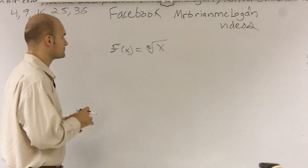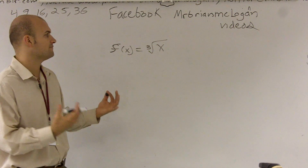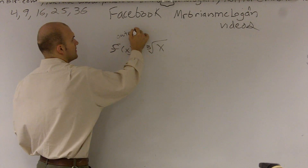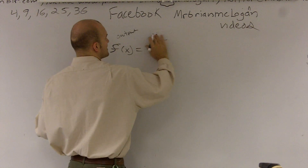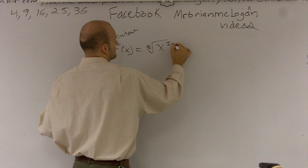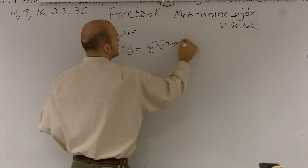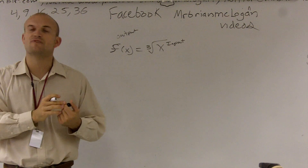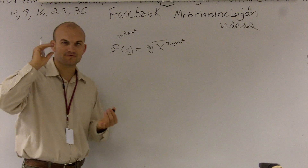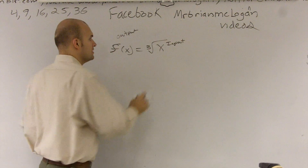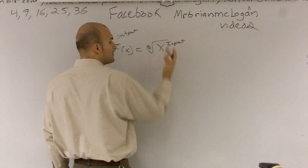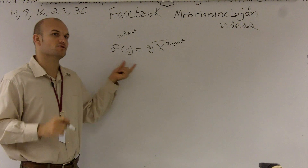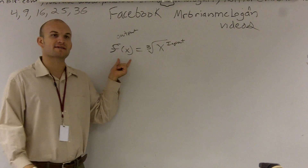A lot of times when we talk about our function, we have our output value and our x as our input value. What we're going to do is switch those two values. It's very easy to see this graphically, but to represent this in an equation, a lot of times we've been using f of x as our output.